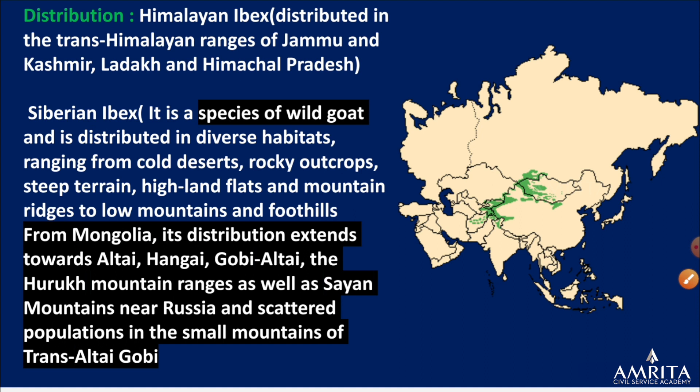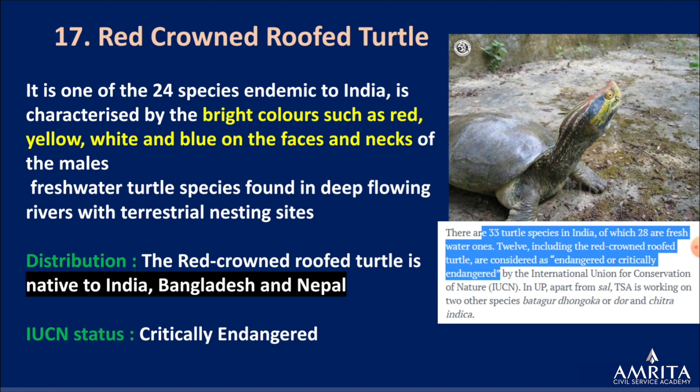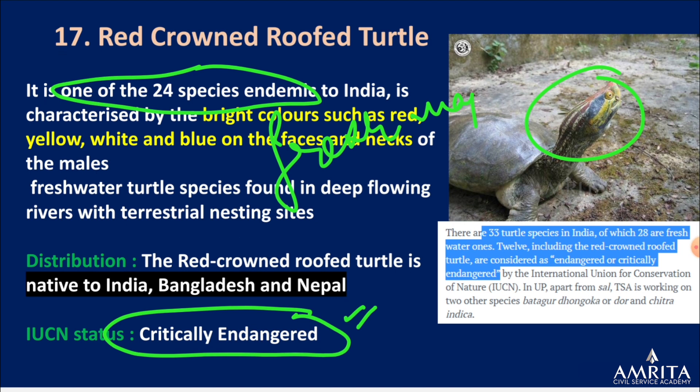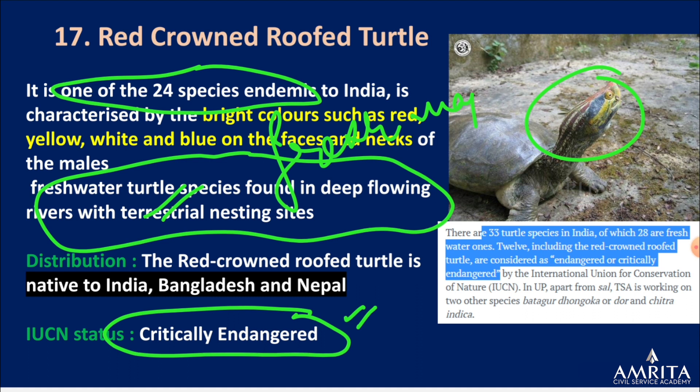Red-crowned roofed turtle — a critically endangered species and one of 24 freshwater species endemic to India. It has beautiful red, yellow, white, and blue coloring. It is a freshwater turtle species found in deep flowing rivers with terrestrial nesting sites. It is native to India, Bangladesh, and Nepal.